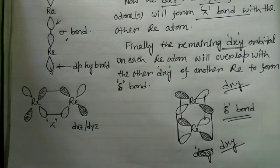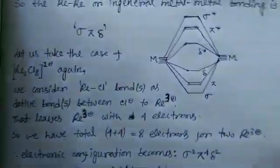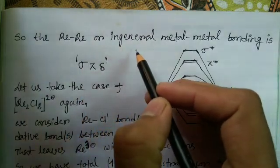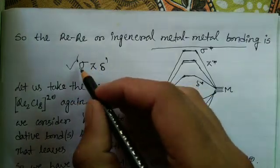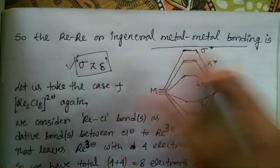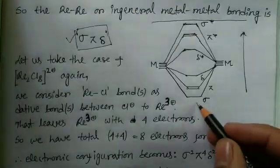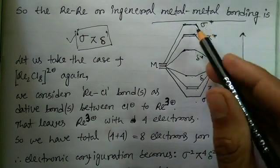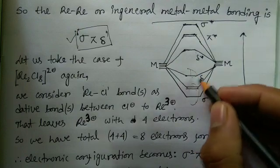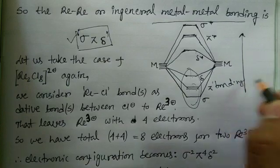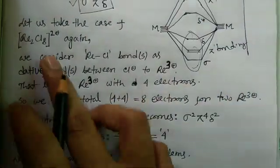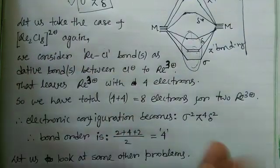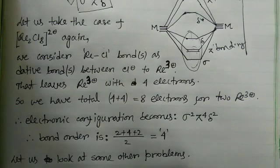So with all these orbitals, after looking at the full bonding pattern, we can say that rhenium-rhenium — or in general metal-metal — bonding is of the sigma-pi-delta type. This is the energy level diagram: the sigma orbital has the lowest energy, then pi, then delta. Above those are the antibonding orbitals: delta star, pi star, and sigma star. There are two pi bonds, so in total there are four bonding orbitals and corresponding antibonding orbitals.